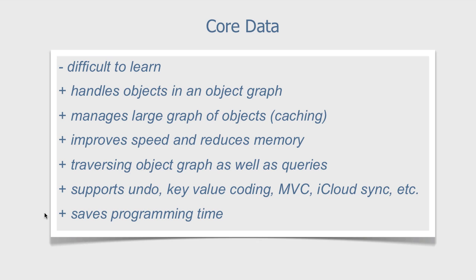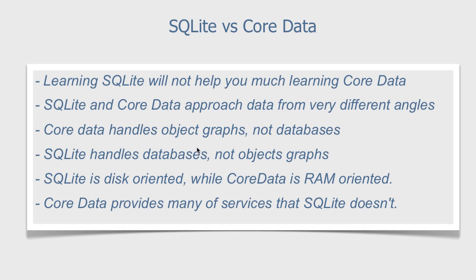Let's say a little about SQLite vs Core Data. First, learning SQLite will not help you much in learning Core Data. SQLite and Core Data approach data from very different angles. Core Data handles object graphs, not databases. SQLite handles databases, not object graphs. SQLite is disk-oriented, while Core Data is RAM-oriented. Core Data provides many services that SQLite doesn't. Core Data uses many new words, and you will likely be overwhelmed the first time you start to learn it. Some concepts are similar but not identical to those used in databases.